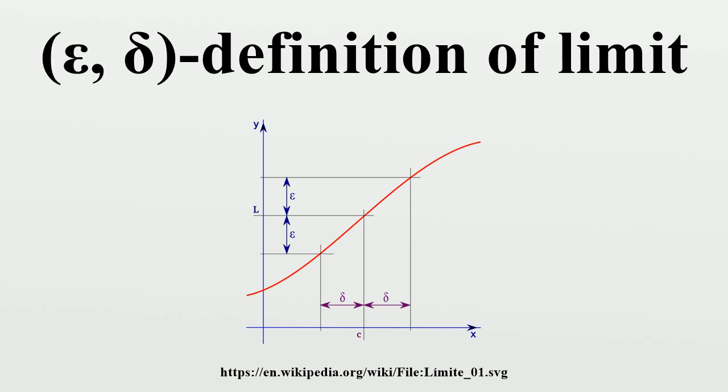Therefore delta depends on epsilon. The limit statement means that no matter how small epsilon is made, delta can be made small enough. The letters epsilon and delta can be understood as error and distance, and in fact Cauchy used epsilon as an abbreviation for error in some of his work. This definition also works for functions with more than one argument.